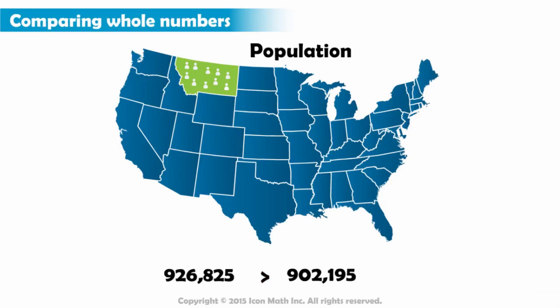So, we get nine hundred twenty-six thousand eight hundred twenty-five is greater than nine hundred two thousand one hundred ninety-five.